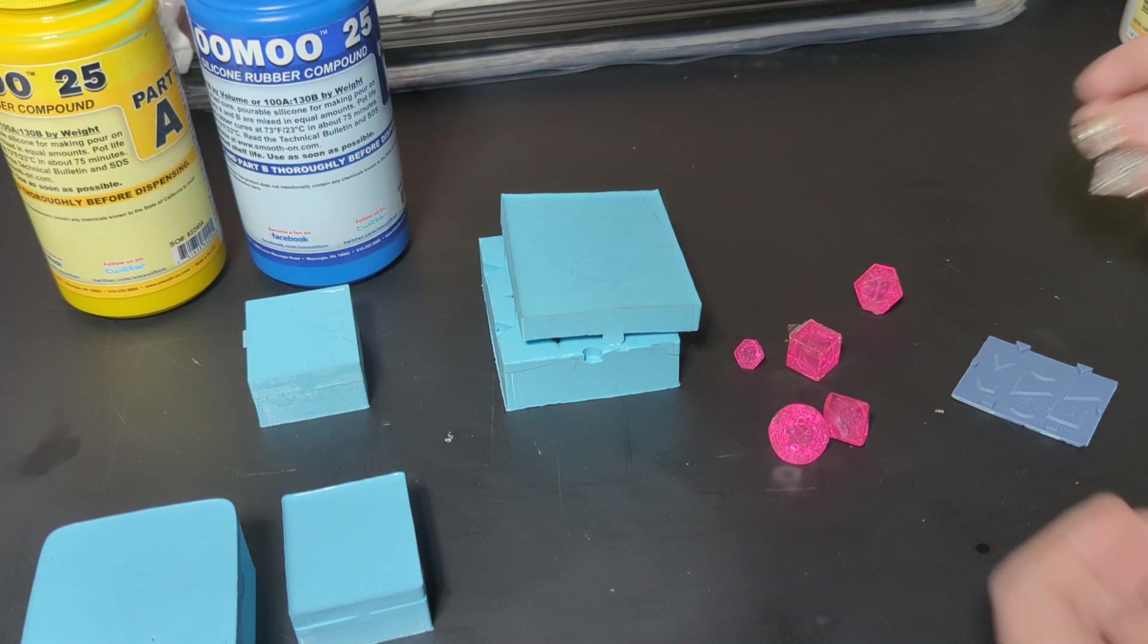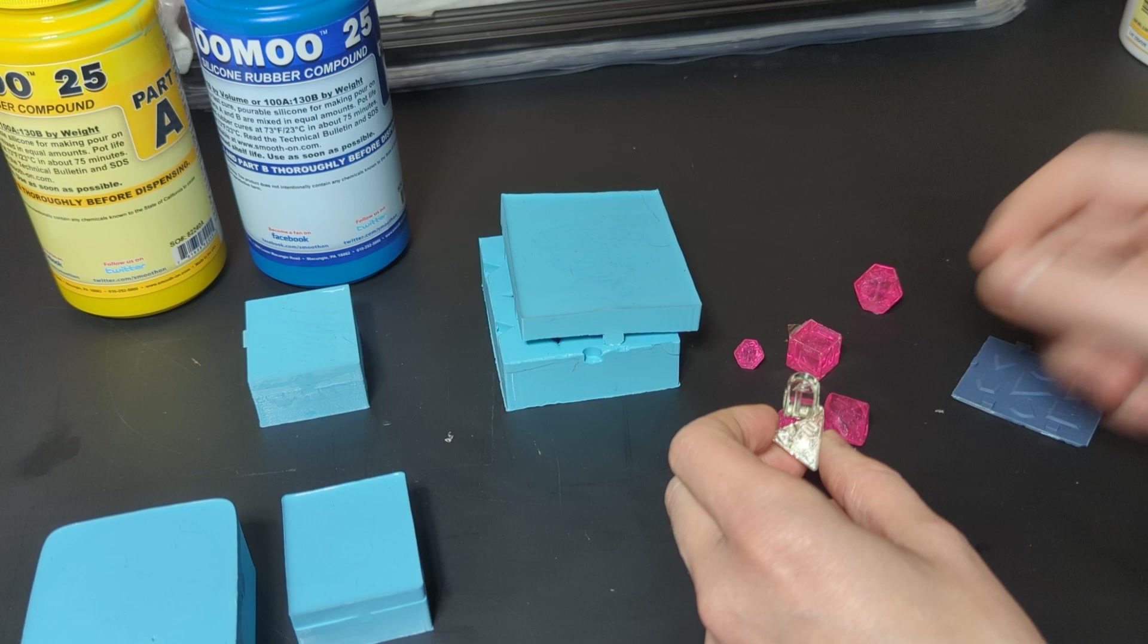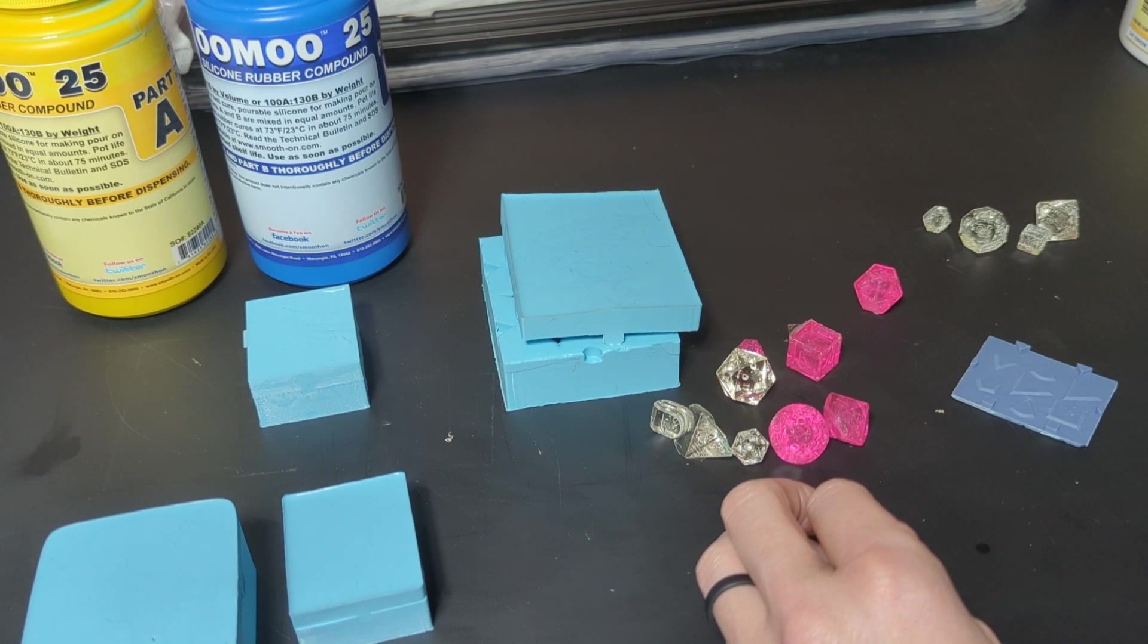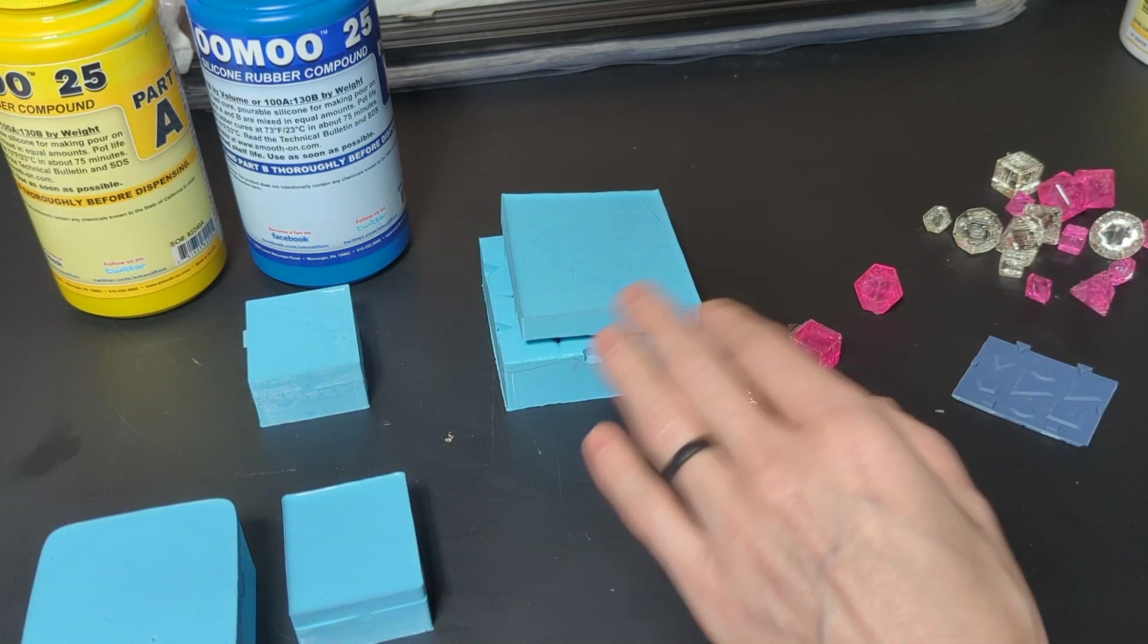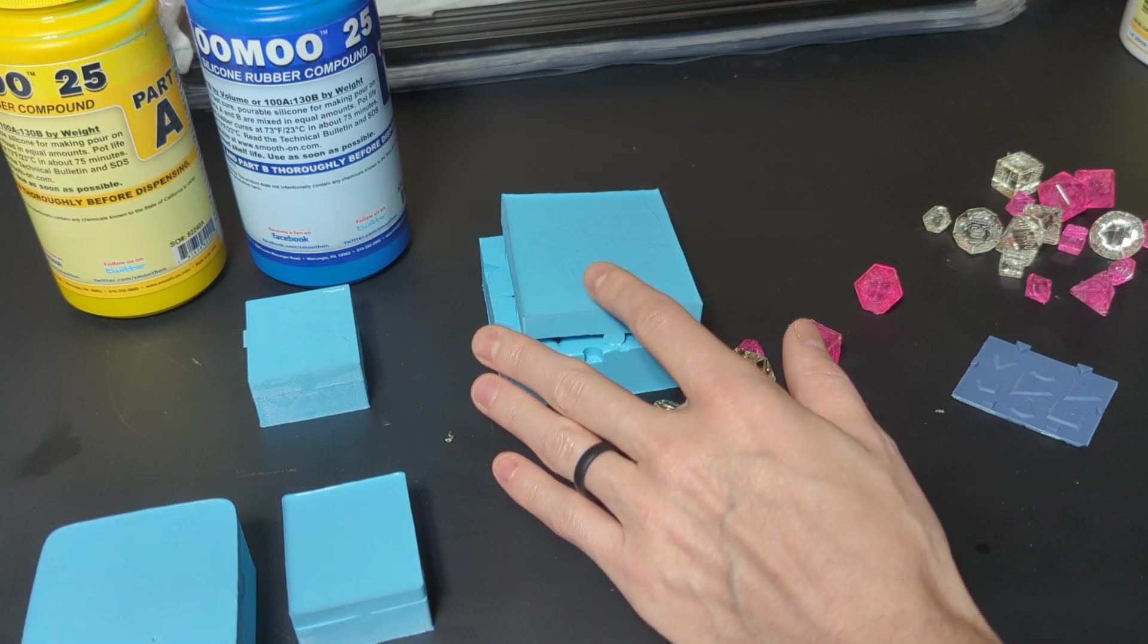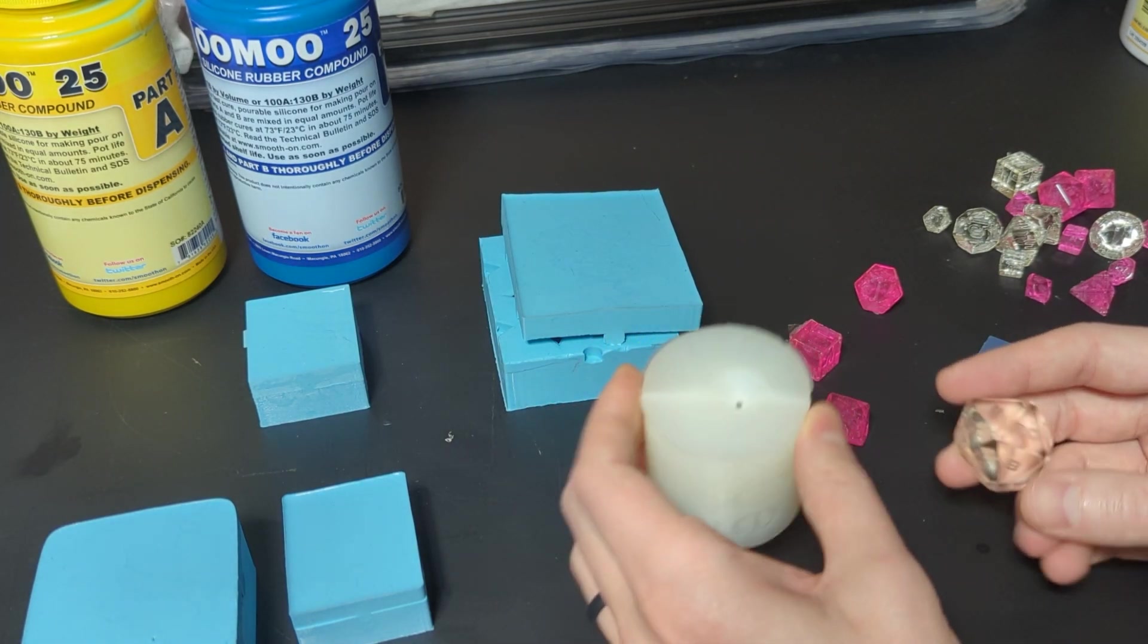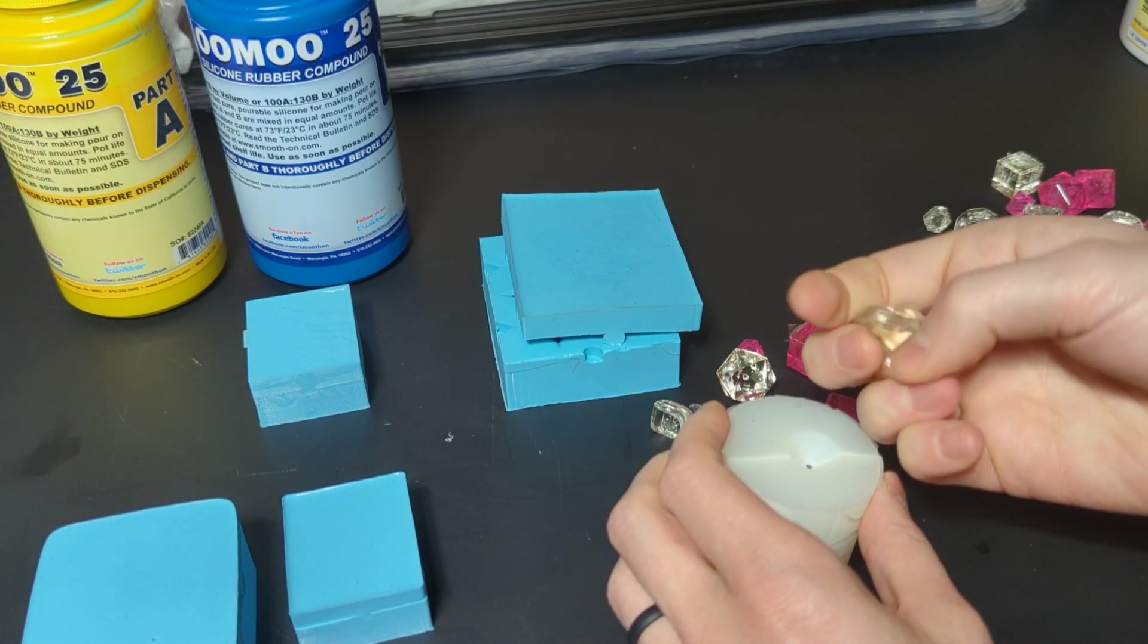So I thought maybe there was something wrong with my resin mixture. I tried it again, same thing, still really sticky. So I tried it again. This time I put part of it in this mold and then another little bit in an older platinum mold that I had, this is Dragon Skin.